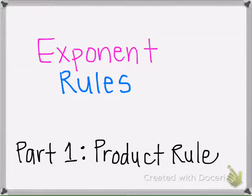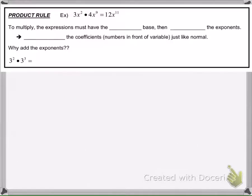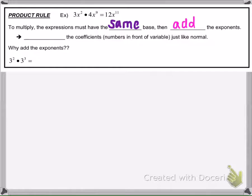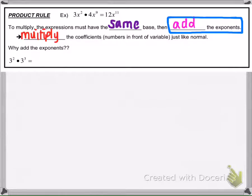This video lesson is on exponent rules. In particular, we're going to focus on the product rule. The product rule says to multiply expressions, they must have the same base, and if they do, then we can add the exponents. And then we're going to multiply the coefficients — the numbers in front of the variable — just like normal.